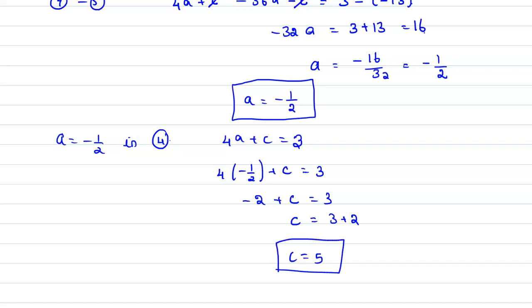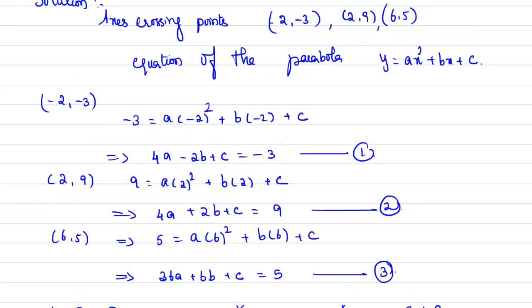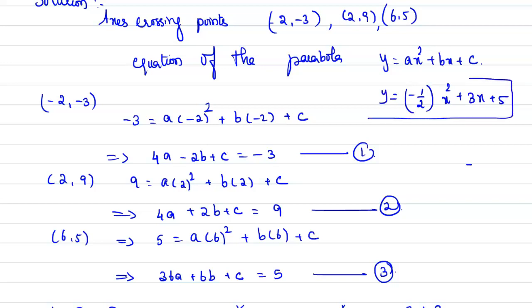Substituting all values into the general form of the equation of a parabola: y = (-1/2)x² + 3x + 5. Hence the equation of the parabola is y = -x²/2 + 3x + 5.